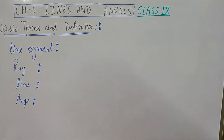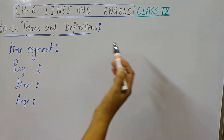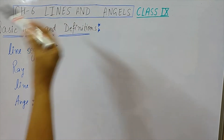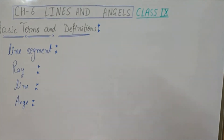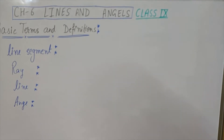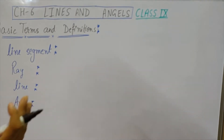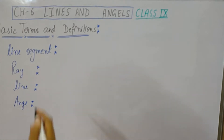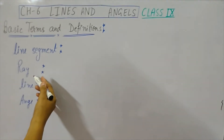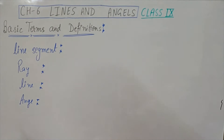Hello students, in this video we are going to start a new chapter of class 9 — Lines and Angles. In 9th standard you will find all together five or six chapters of geometry, so from that point of view this chapter is very important. Let us start with some basic definitions and terms. First, here come line segment, ray, and line — though these three seem to be similar, they are actually not.